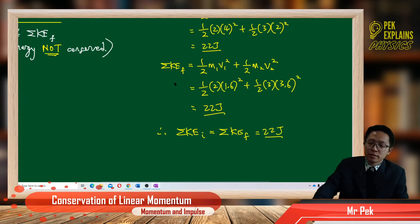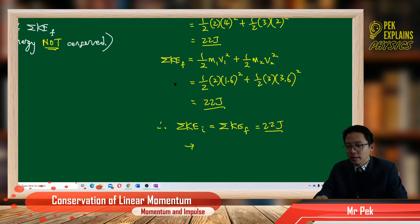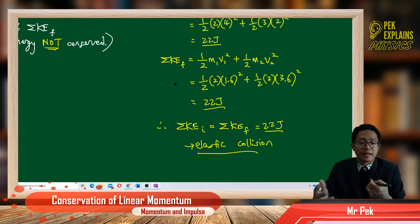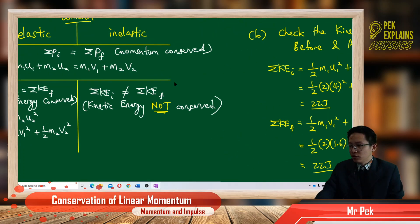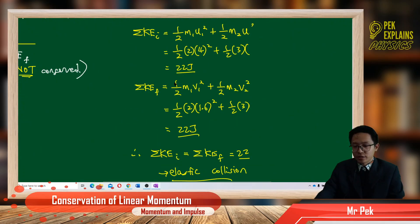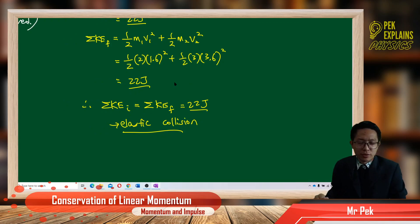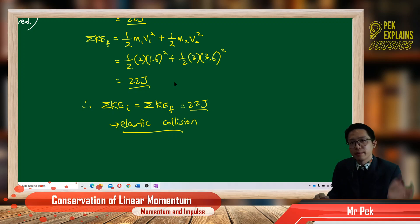So what does this tell us? It tells us that this is an elastic collision, because kinetic energy before equals kinetic energy after collision, meaning kinetic energy is conserved. That's all for the questions. I hope you enjoy the video. Any questions, anything you don't understand, please leave a comment below. Hope you subscribe. Bye, see you again.